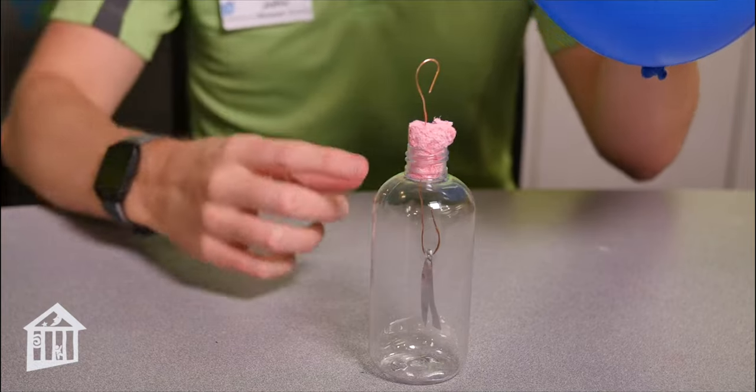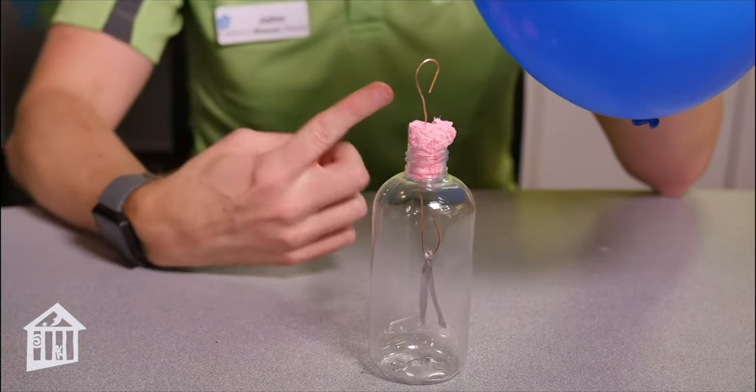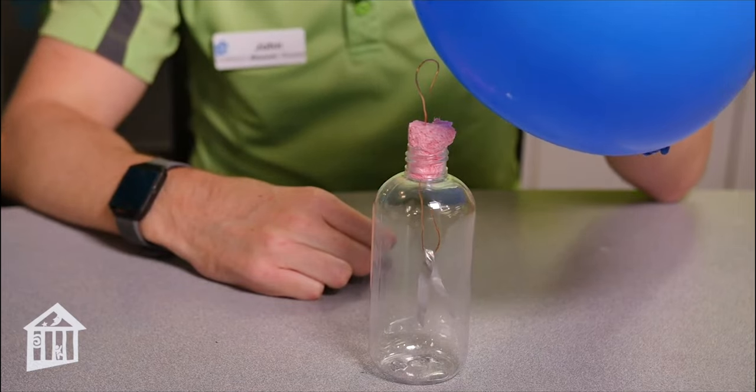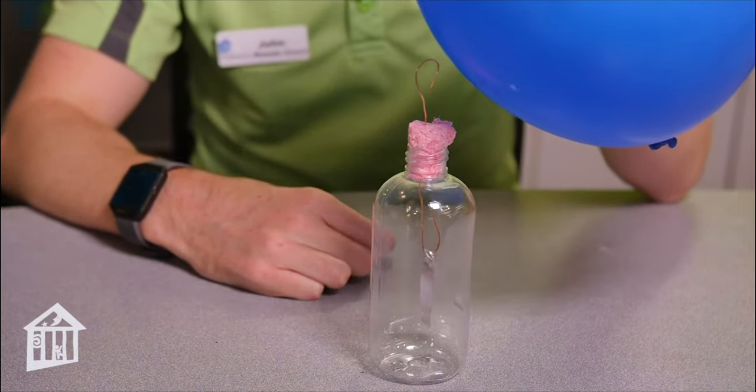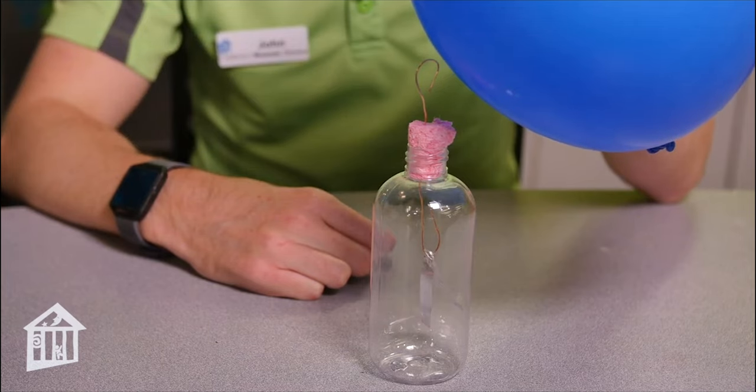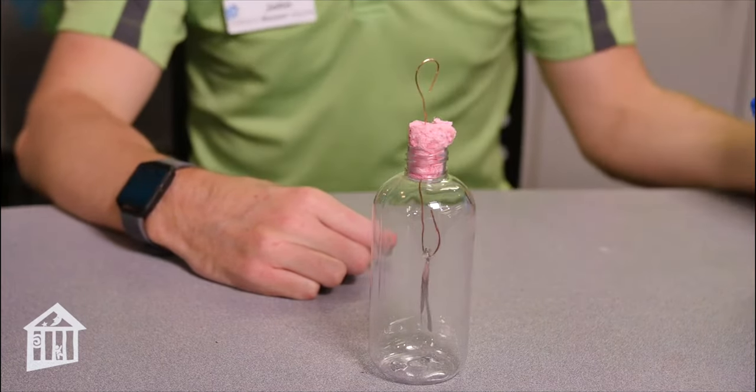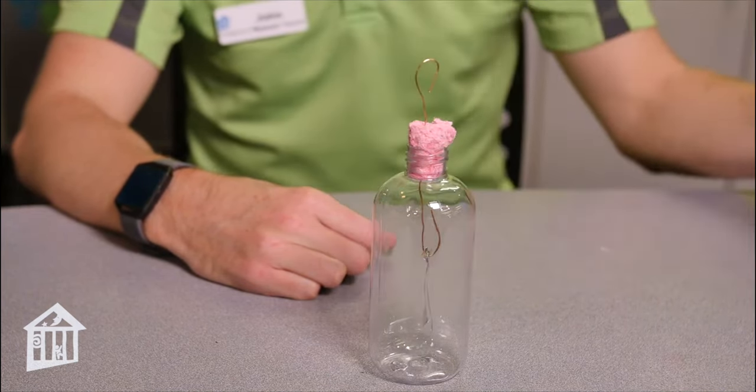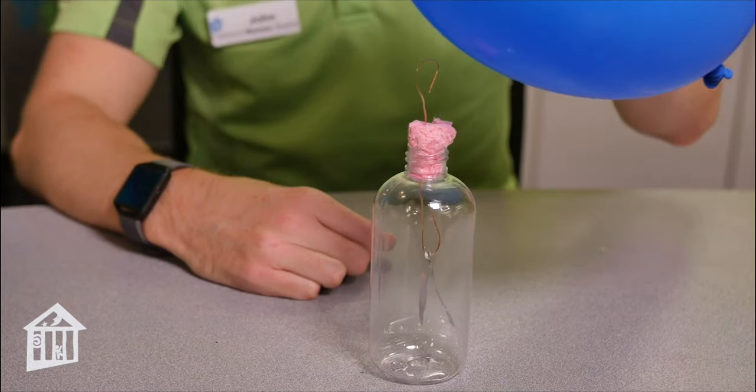Let's use our electroscope to test if this balloon has a static charge. The electrical charges from the balloon move to the metal and down to the aluminum foil leaves. Since each foil leaf has the same charge, positive or negative, they repel each other. The electroscope will work best if the foil pieces are flat as possible.